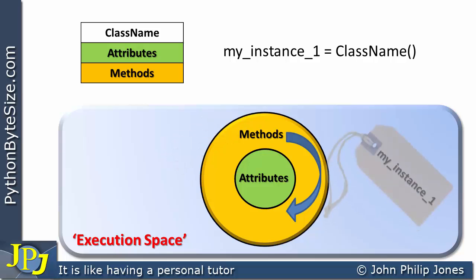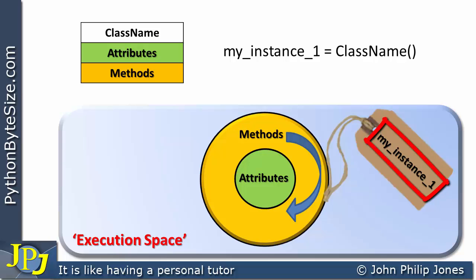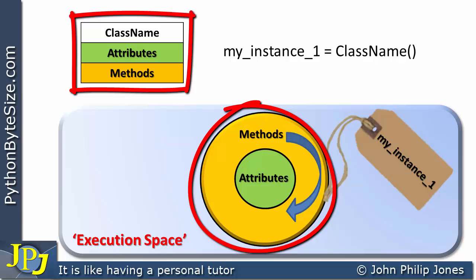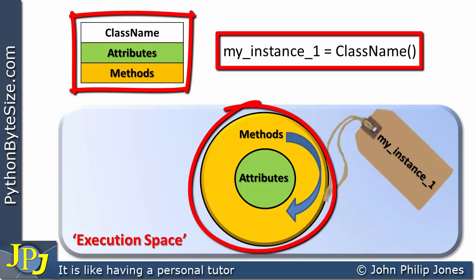So for example, if here we had seven attributes, we'd have seven attributes here. If this had five methods, then we'd have five methods here. That's what I'm trying to represent with this particular diagram. Now of course, this particular object is going to have the name my_instance_1, and of course this name has come from here in the code. And this object I know is based on this class because I'm using this here: my_instance_1 is assigned ClassName with those two brackets.